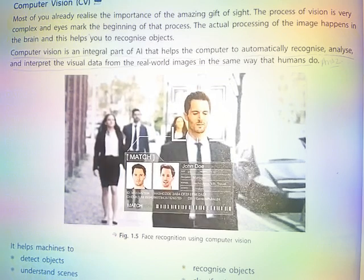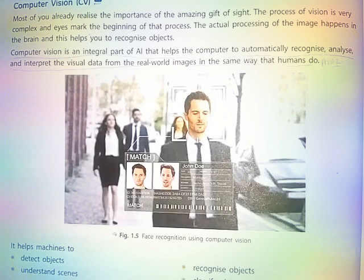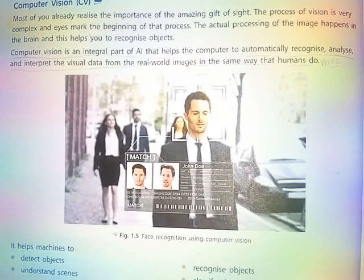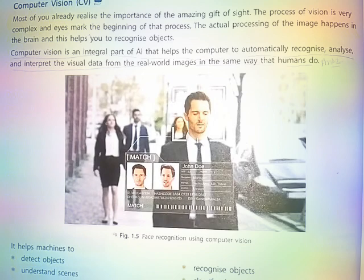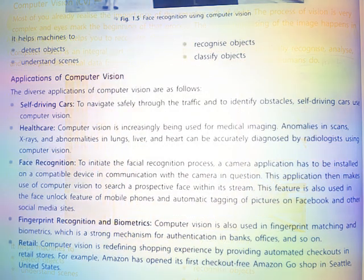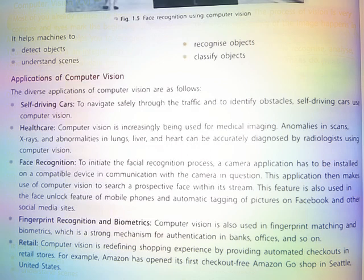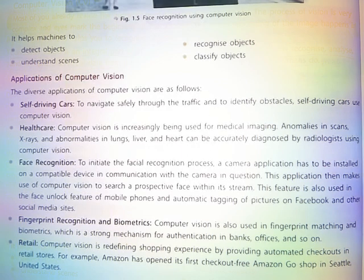Computer Vision is an integral part of AI that helps the computer to automatically recognize, analyze, and interpret visual data from the real world in the same way that humans do. It helps machines to detect objects, understand scenes, recognize objects, and classify objects.